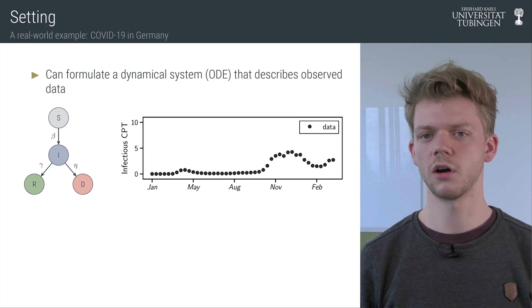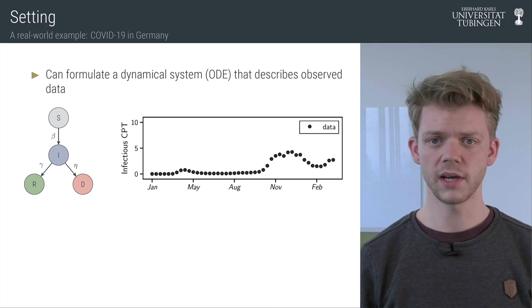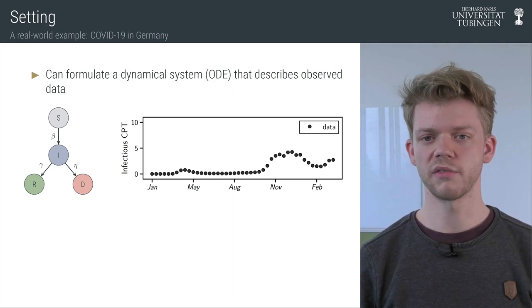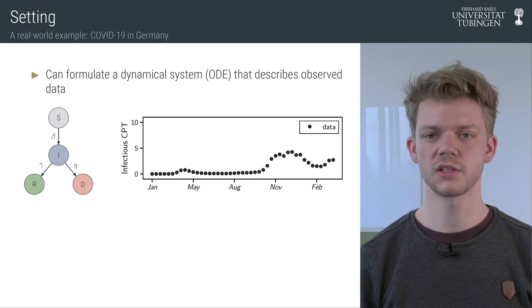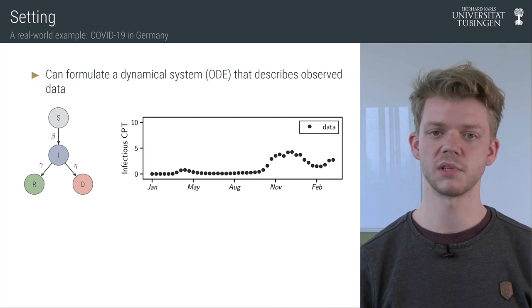A prominent example for this would be the COVID-19 pandemic. Here on the right you see the number of infectious people in Germany over the course of the pandemic scaled to cases per 1000 people.